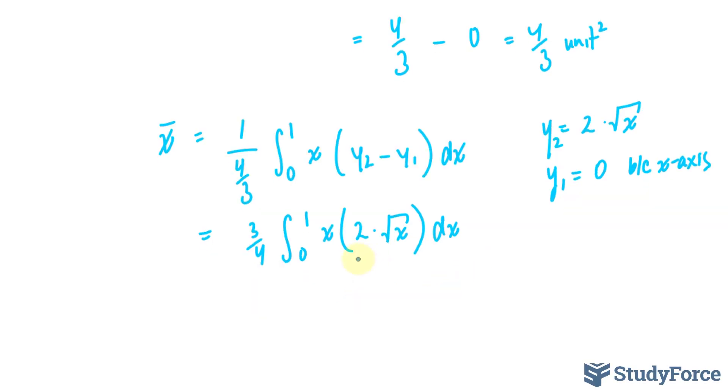I can pull out this 2, that gives me 6 over 4, and the integral now, of x times the square root of x. What I'll do is use the laws of exponents to add these up, so this has an exponent of 1 and this has an exponent of half. Adding up the two numbers, we end up with x to the power of 1.5. Add 1, divide by the sum, which is 2.5.